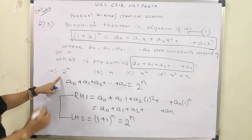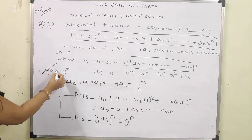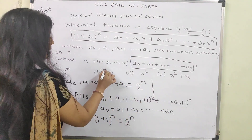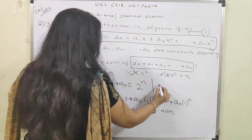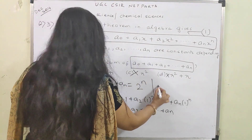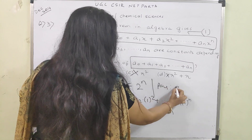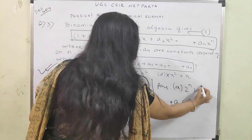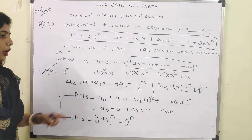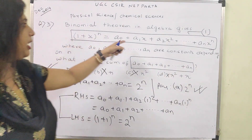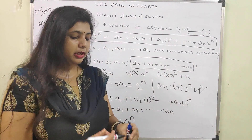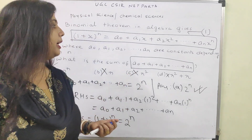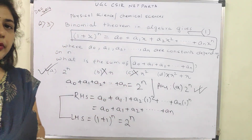So the correct answer is 2^n, which is option A. Mathematics students will find it very easy; others will also understand it. Let's move ahead for another question.